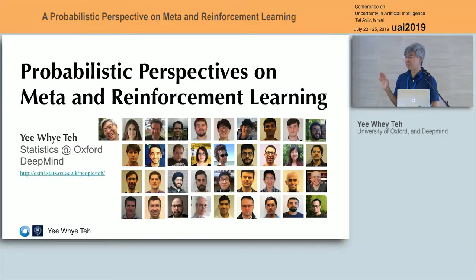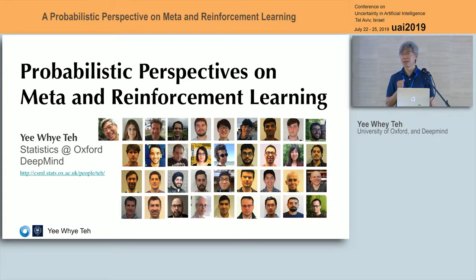The title of the talk is 'Probabilistic Perspectives on Meta and Reinforcement Learning.' Buried in here is also that we use a lot of deep learning technology, so any conditional distribution or function that you see is all neural networks. And also buried in here there will be some ideas from Bayesian nonparametrics as well. So it's a bit integrative — it brings together all the different strengths of machine learning that I've worked on over the years. This is joint work, actually multiple papers, with lots of co-authors from DeepMind. It's been great working there; it's very collaborative.